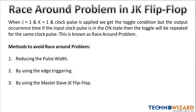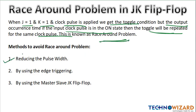How can we remove the race-around condition in JK flip-flop? The race-around problem occurs when J=1, K=1, and a clock pulse is applied — the toggle is repeated for the same clock pulse. To remove it, you can reduce the pulse width of the clock by using edge triggering or by using a master-slave JK flip-flop.